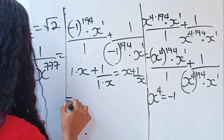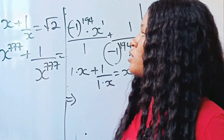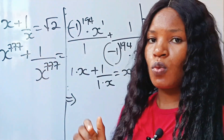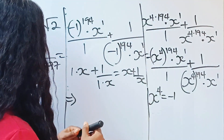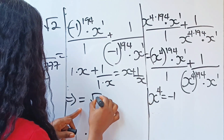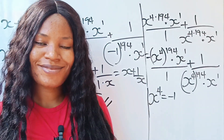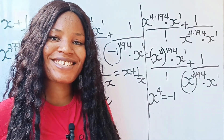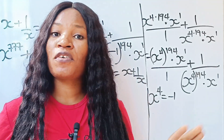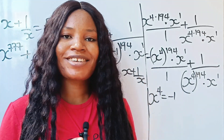According to the original question, x plus 1 over x is equal to root 2. So that simply means this entire expression equals root 2 — that is our final answer. Thank you so much for watching, and don't forget to subscribe, comment, like, and share.